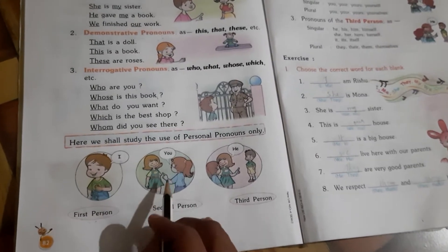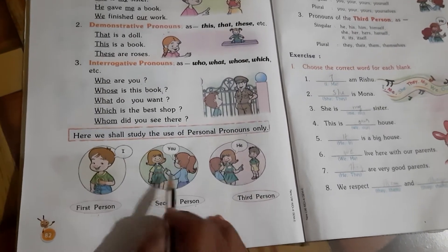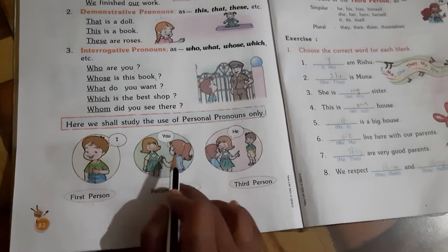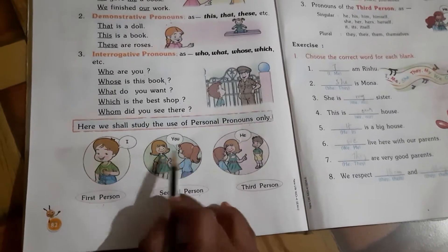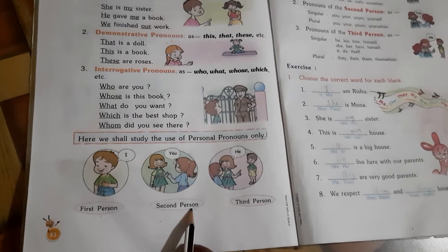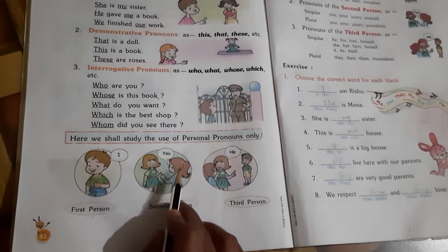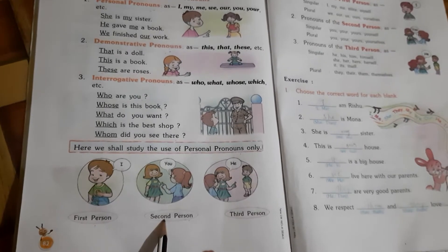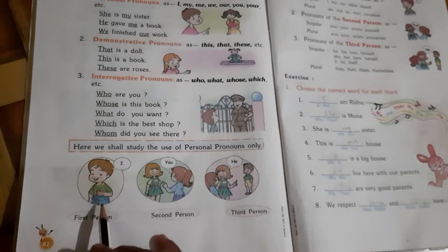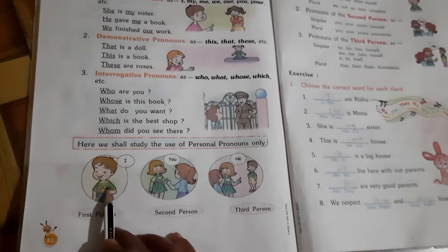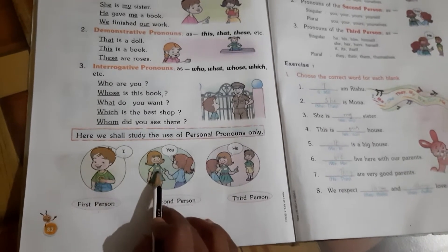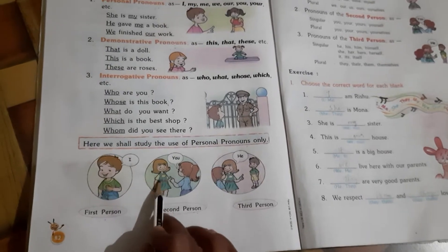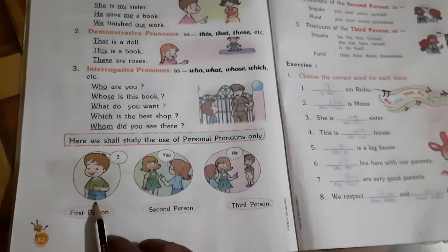Second person is the one who is listening. If one girl is speaking, another is listening — the listener is the second person. So: the speaker is the first person, and the listener is the second person.